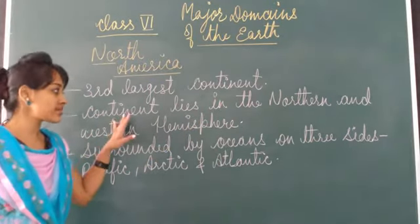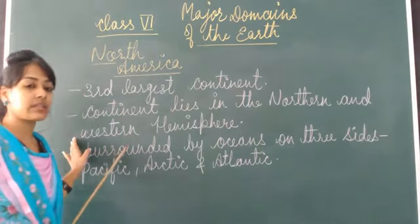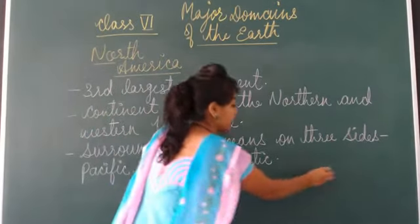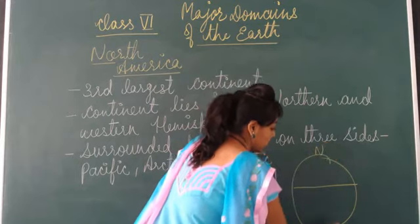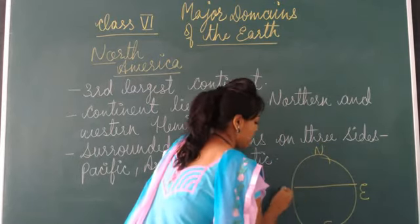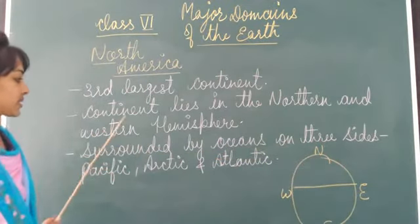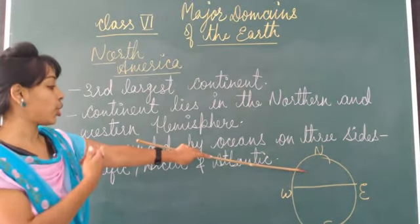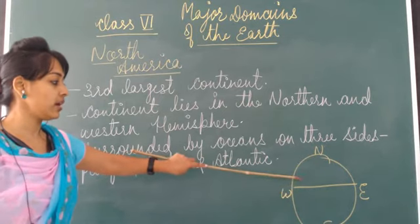Second, this continent lies in the northern and western hemisphere. So there are two hemispheres — northern and southern, east and west. Northern means this portion, and western means this side. So North America lies over here, on this side.